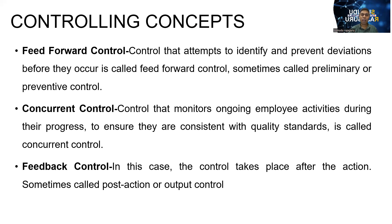Then the third one — feedback control. In this case, the control task takes place after the action, sometimes called post-action or output control. That means we have already done the job, and based on the output, we take some control actions to control the next production activity. That is also called post control. These are the three types of controlling mechanisms.